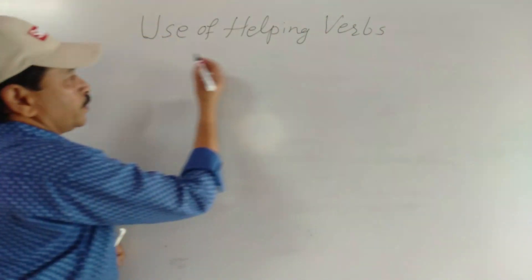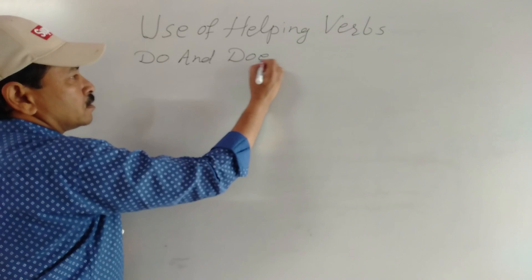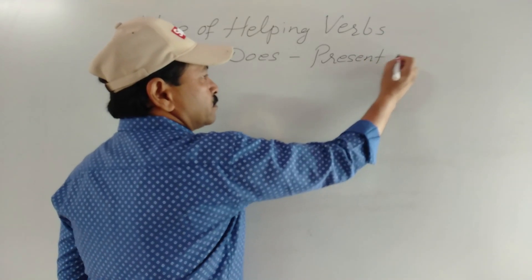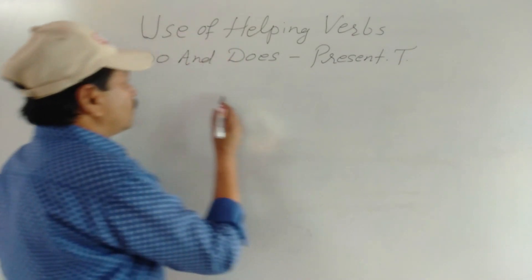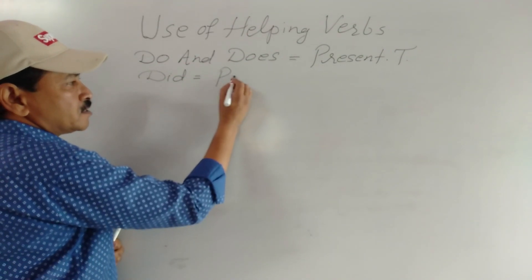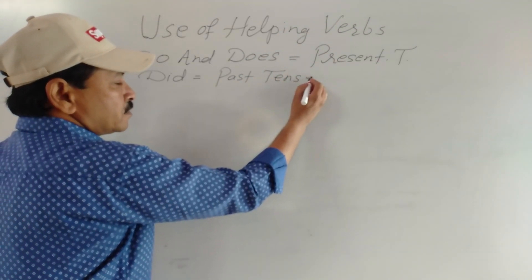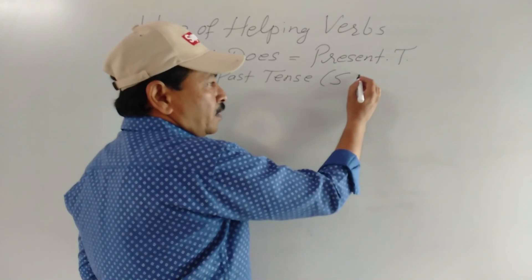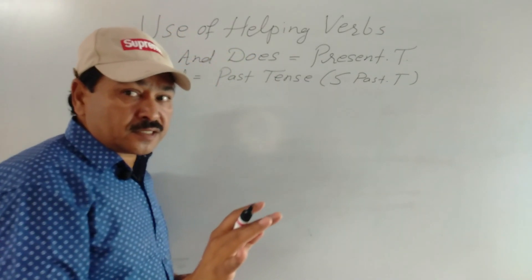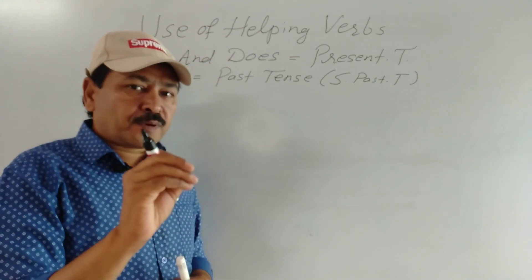Helping verbs do and does — it is used in present tense. और did को आप use करते हैं past tense में, particularly simple past tense — not in past continuous tense, not in past perfect tense. Past continuous में 'was/were' होता है, past perfect में 'had' है।